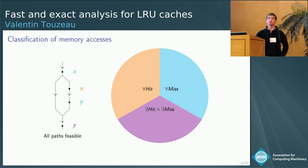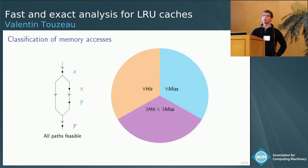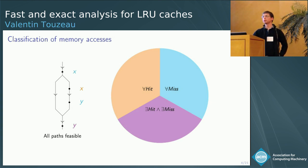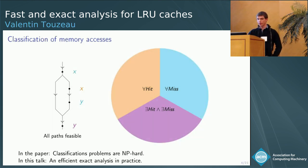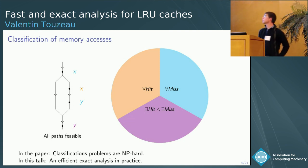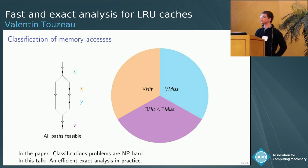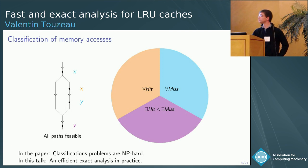The problem we solve is different from the previous speaker's. We assume everything is given and we analyze binaries. What we try to do is certify that some blocks always lead to a hit and some always lead to a miss. We show in our paper that these classification problems are NP-hard. In this talk, I will describe the analysis we came up with, which is efficient in practice to solve this problem.